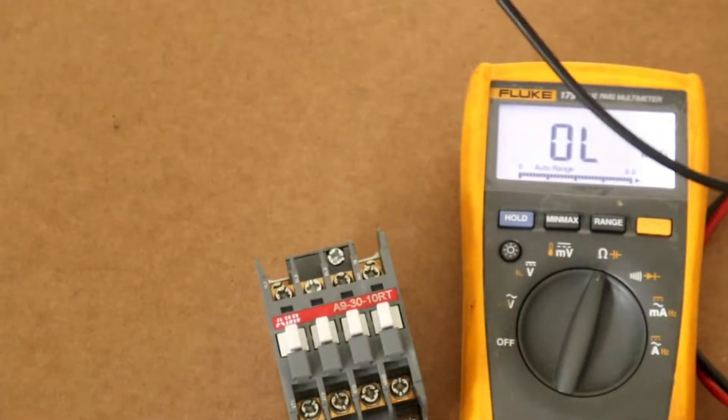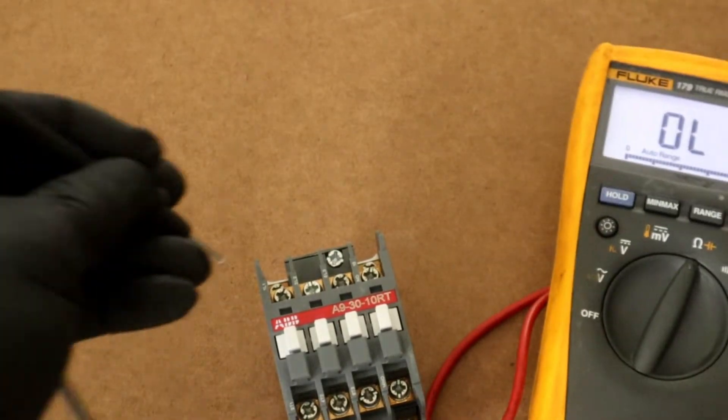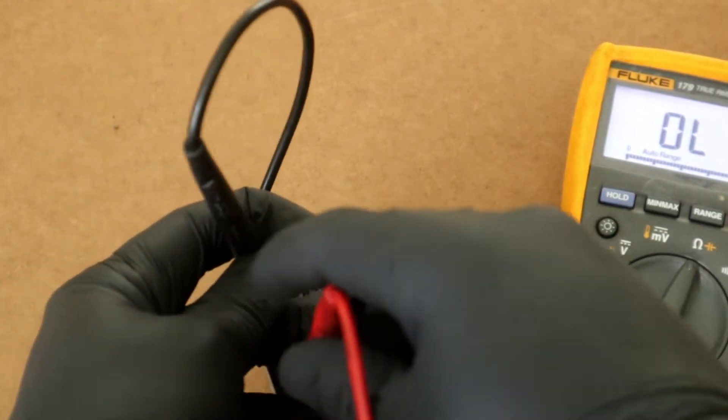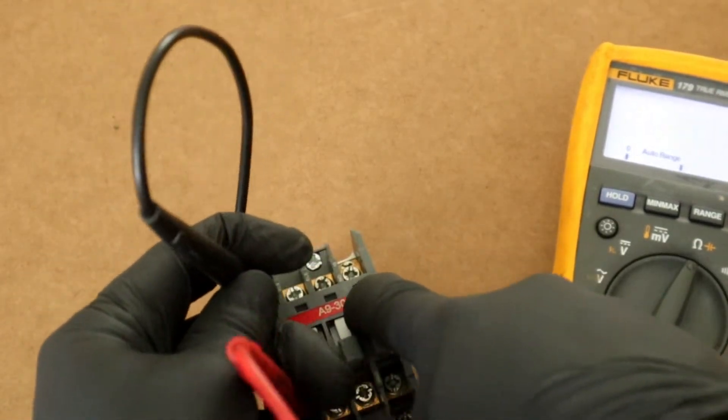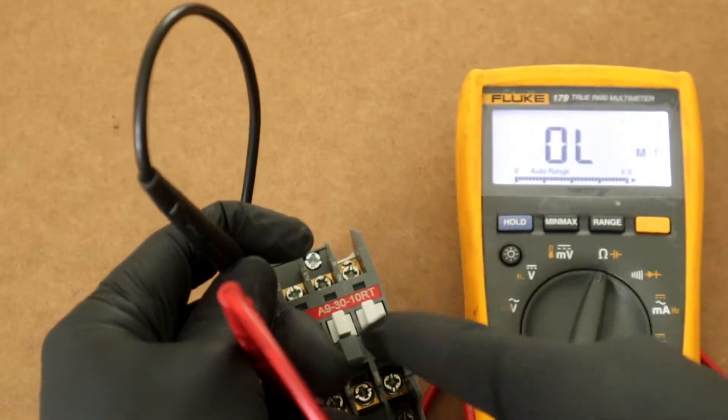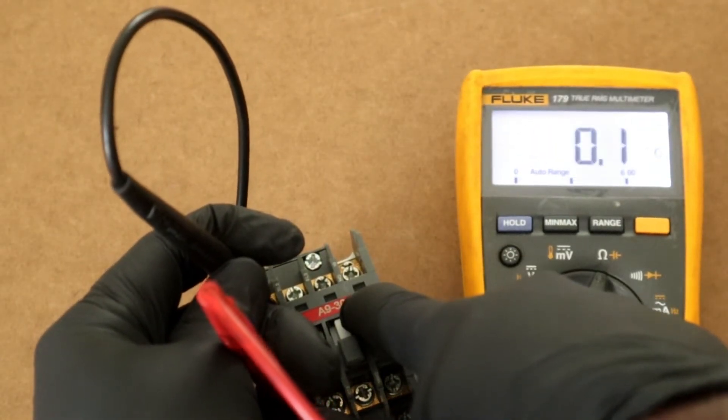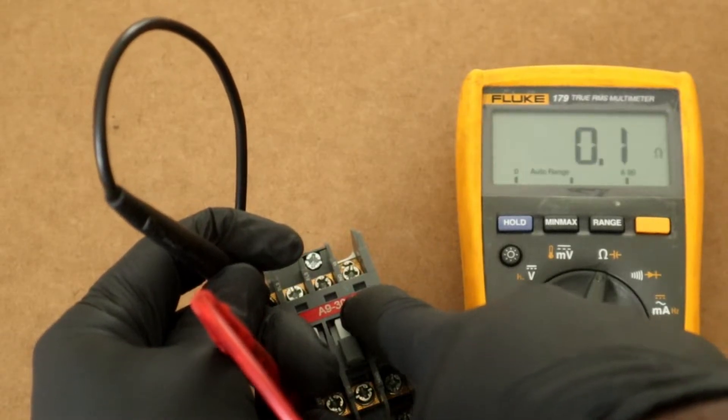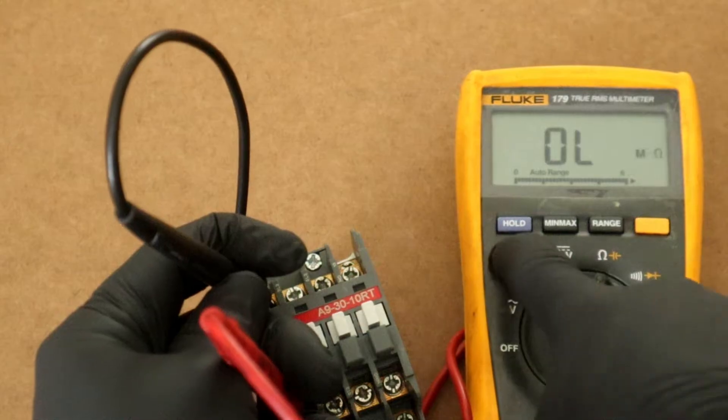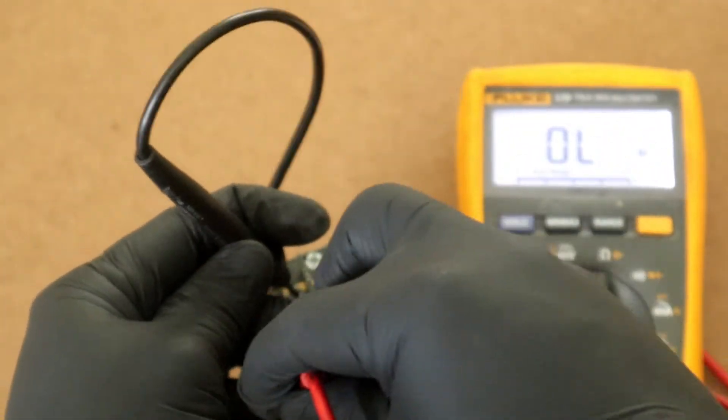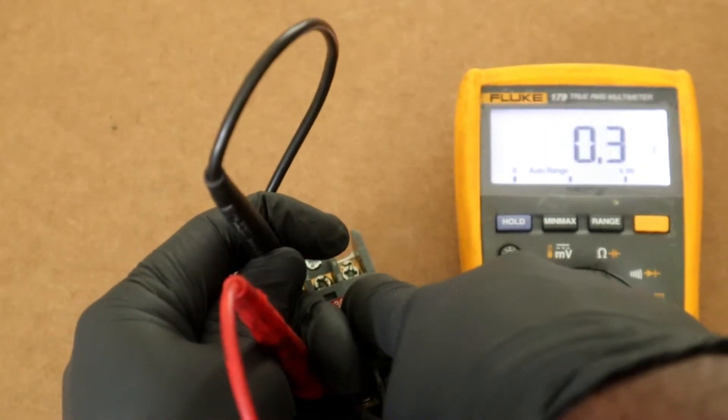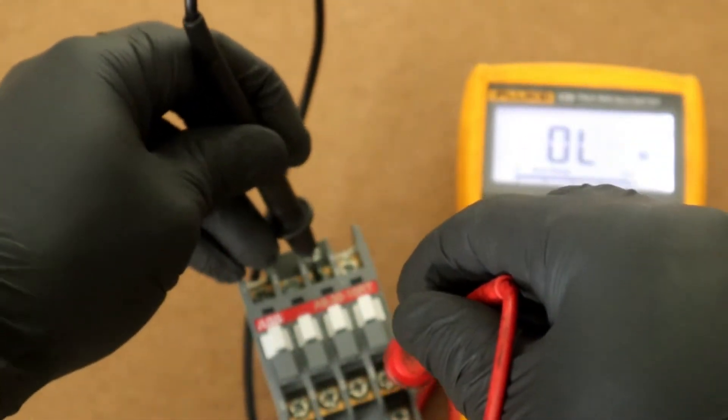We're going across L1, T1. Push it in, we have 0.1 ohm. So we have continuity across L1 to T1. L2 to T2, manually depress, 0.2 ohms. We are good so far for L2 to T2.